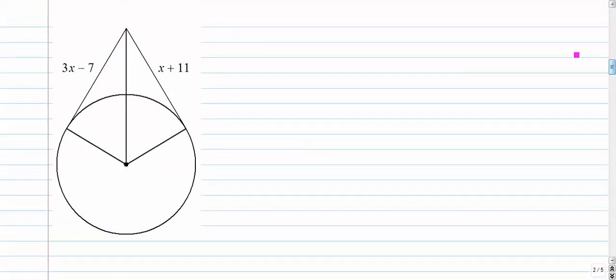So let's do a few examples and we'll see how to apply this. Number one. We're going to assume that these are tangents, so that's a point of tangency and that's a point of tangency. This is a right angle, this is a right angle, and the rule says that this is congruent to this. So you set 3x minus 7 equals x plus 11.